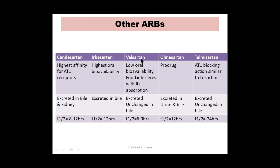Comparison of other ARBs — candesartan, irbesartan, valsartan, olmesartan, and telmisartan: olmesartan is a prodrug among these. Candesartan has higher affinity for AT1 receptors. Most are excreted in both bile and urine, except irbesartan which is excreted only in bile. Most have a half-life of around 8–12 hours. Telmisartan stands out with a half-life of 24 hours, making it the longest-acting ARB.